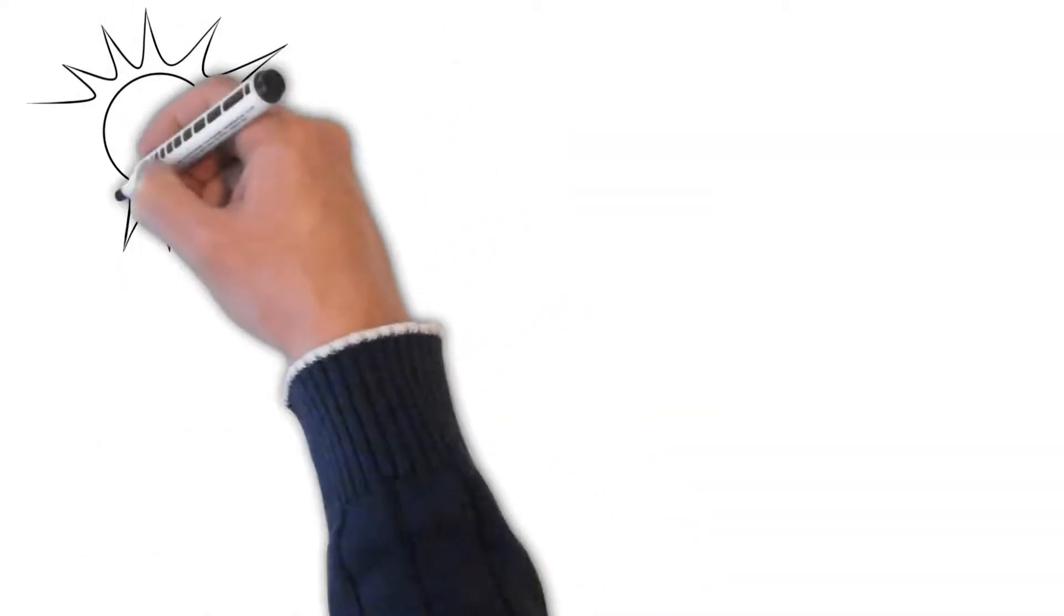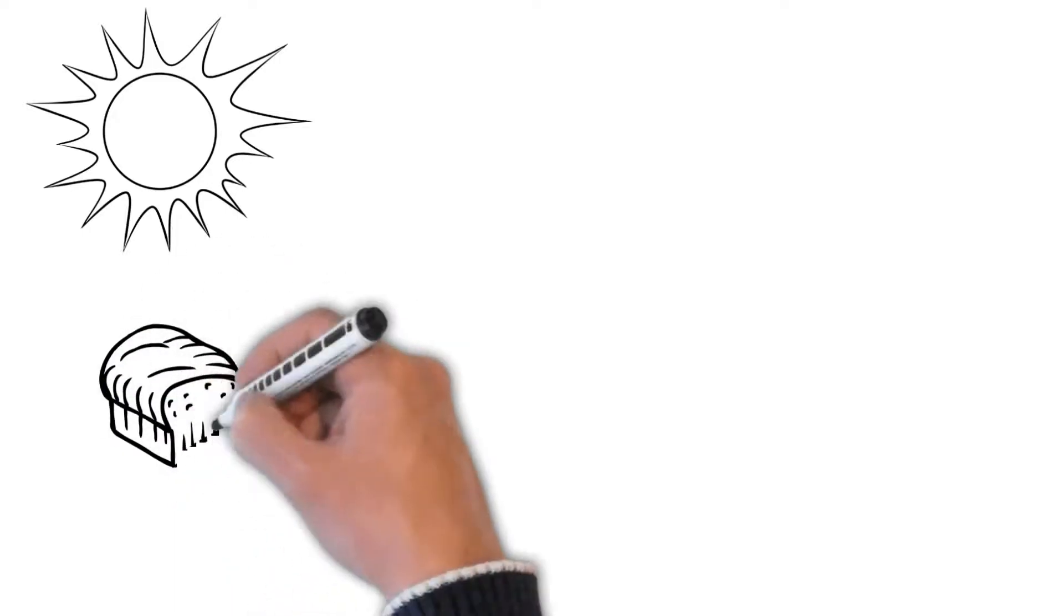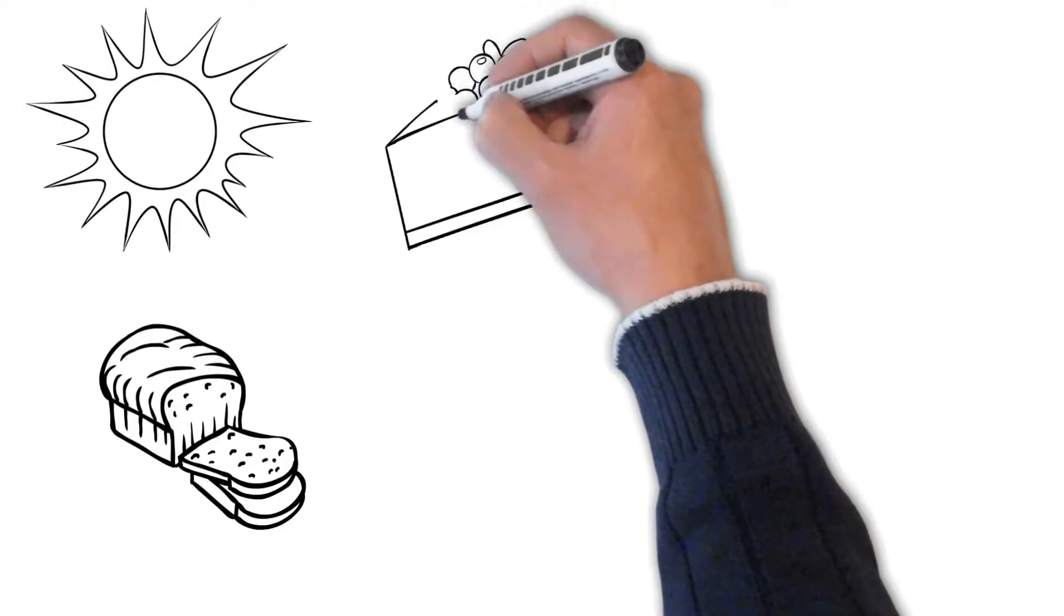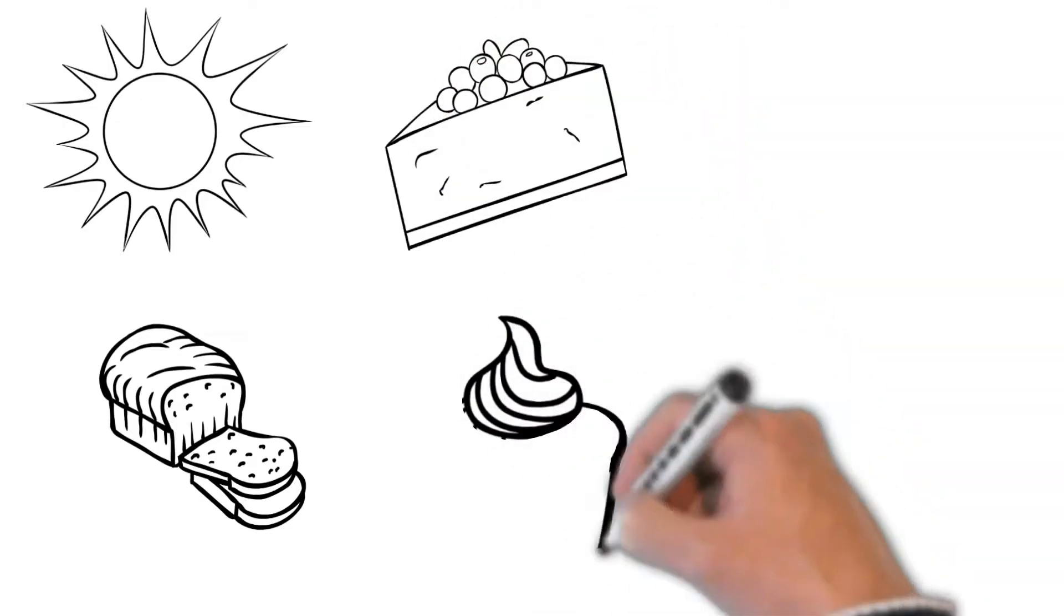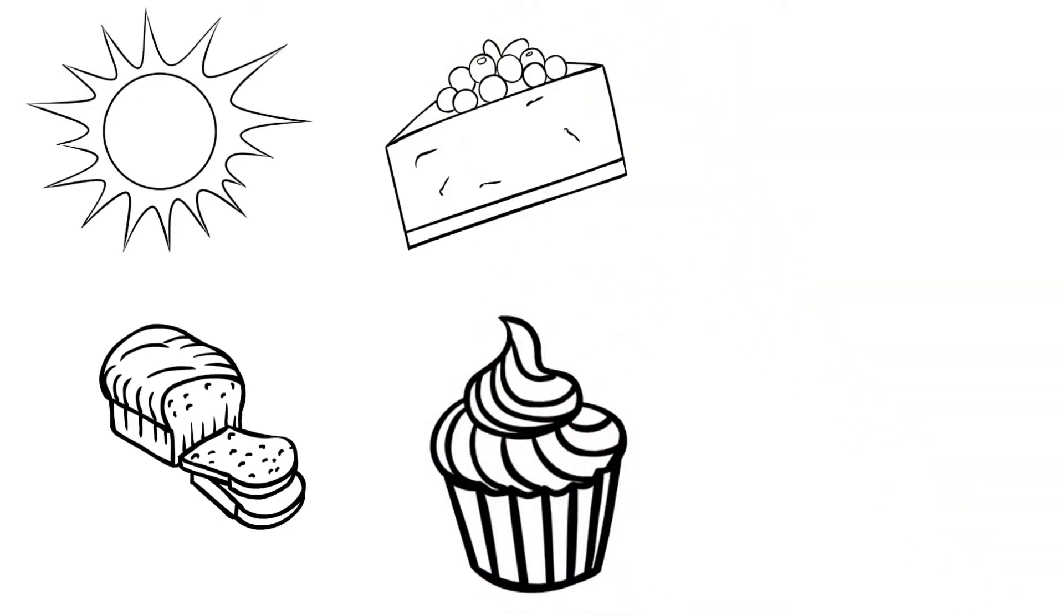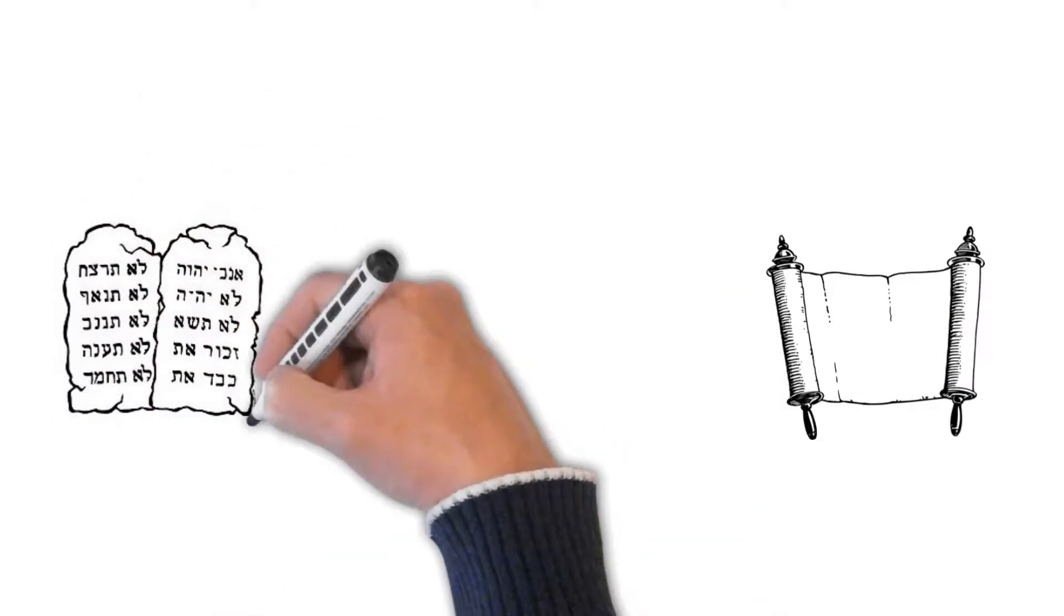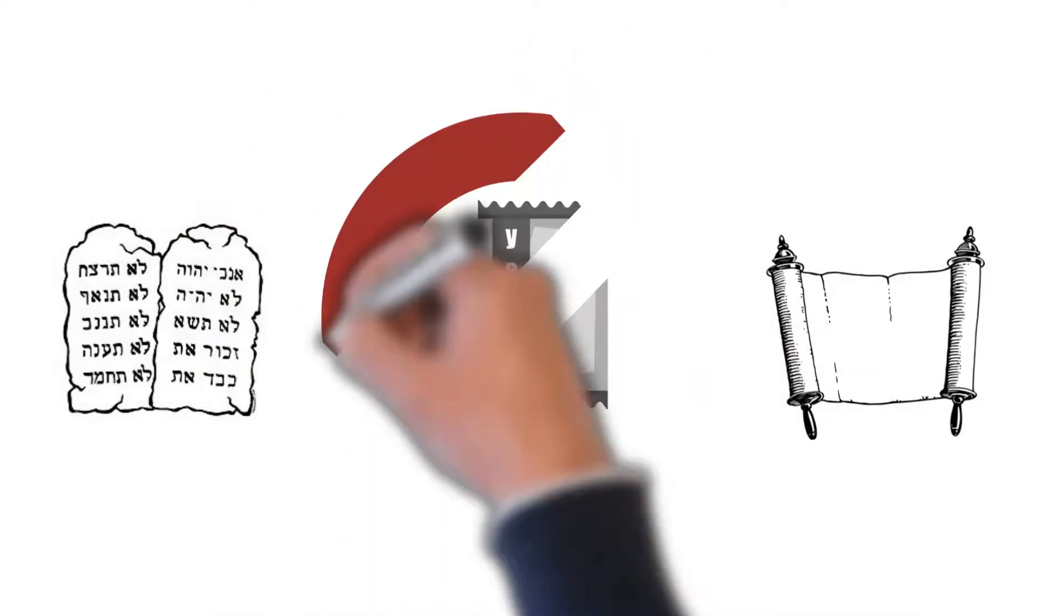On the morning following the search, all the leaven remaining in the house, such as loaves of bread and cakes made with yeast, is collected together along with the yeast found the night before and burned outside the house. In the scriptures, yeast is seen as a symbol of sin.